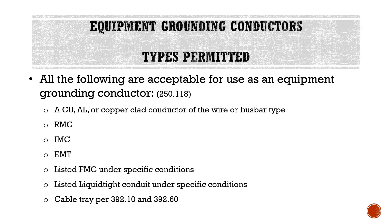For the specific requirements and conditions for each type, you can go to 250.118 in your code and read more on that. It's a lot of very specific information, but it is allowable assuming you meet those specific conditions. Additionally, other listed metal raceways — any type of metal raceway listed as suitable for an equipment grounding conductor — can also be used as an equipment grounding conductor.